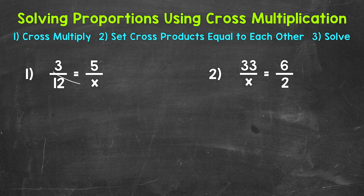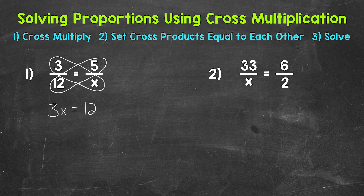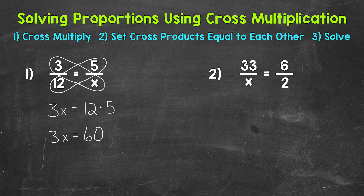First we'll do 3 times x, that gives us 3x. We can bring our equal sign straight down, and then we have 12 times 5. I'm going to use a dot to represent multiplication, so there isn't any confusion between x's that are variables and x's that are multiplication signs. Now we can do 12 times 5 — that equals 60.